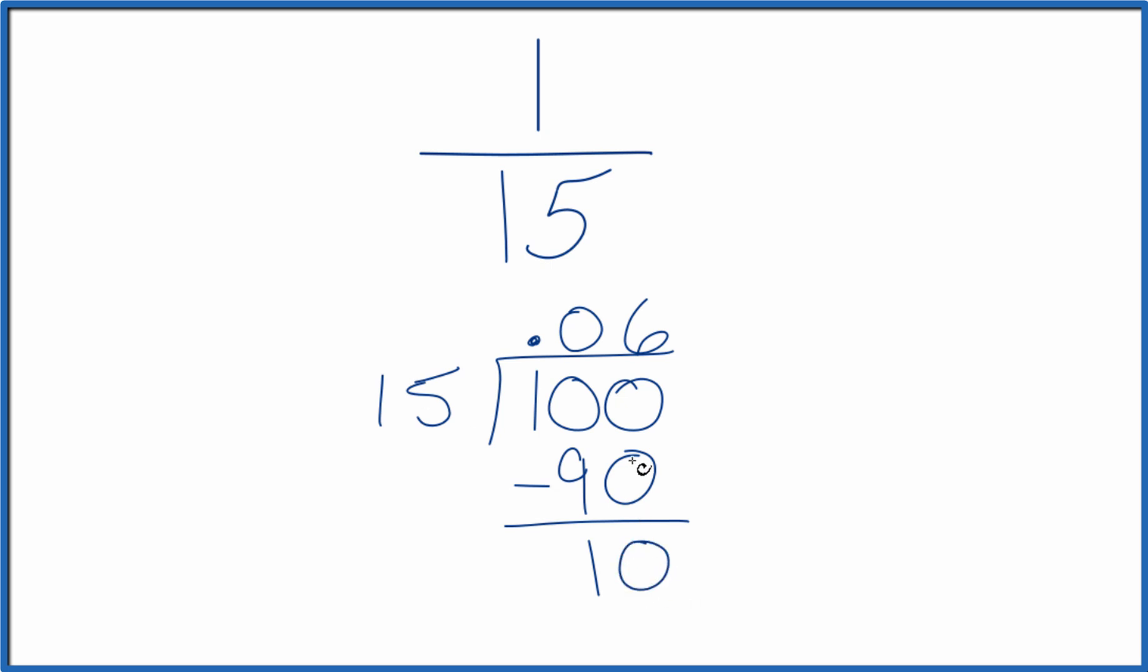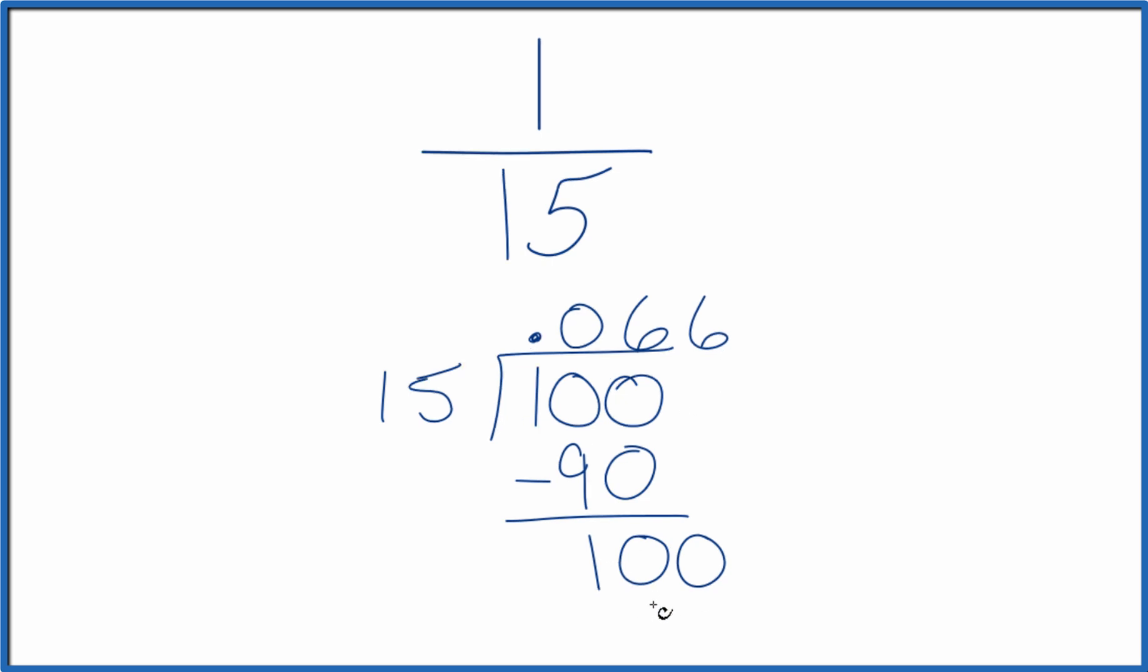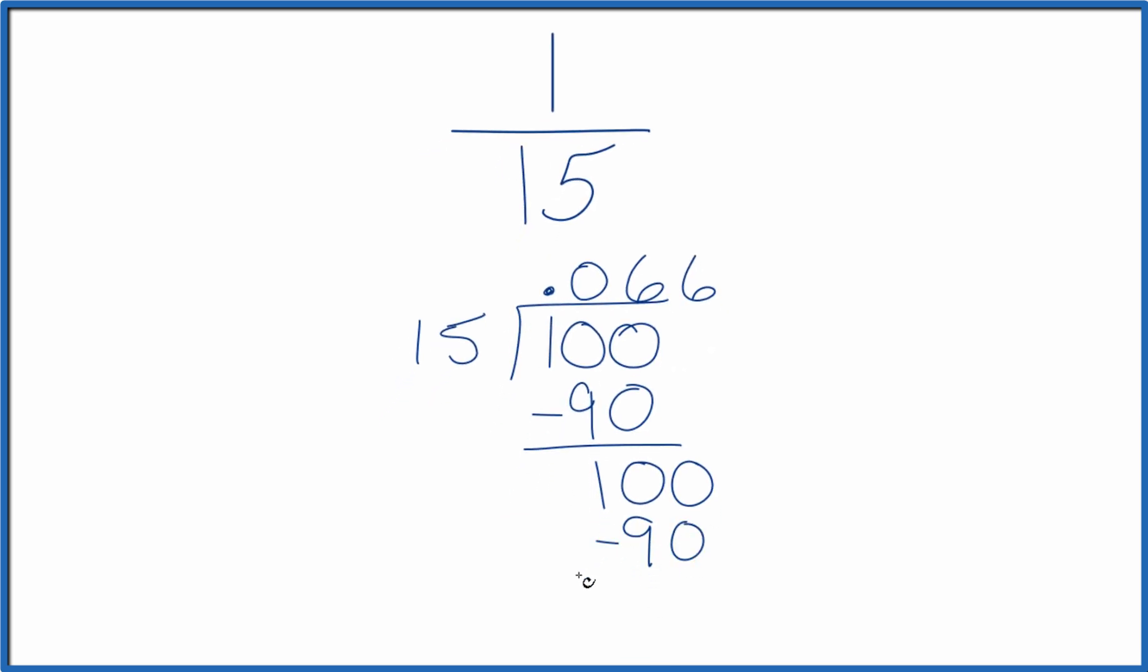So it doesn't go into 10. We'll make it 100, and we're going to move over a place here. 6 times 15, that's 90. And you can see that we end up with 10 again. And the 6 here, it's just going to keep repeating.